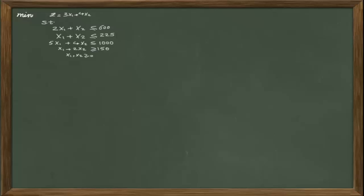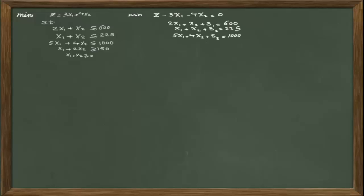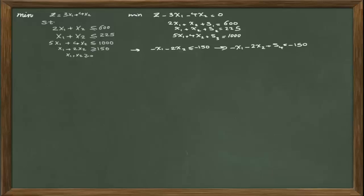The first thing we need to do before starting the dual simplex method is to standardize this problem. The first three constraints can be easily standardized by adding slack variables, since they are all in the form of less than or equal. For the last constraint, we first multiply it by negative one to change the sign to less than or equal, and then add a slack variable to standardize it. So the problem is now standardized and we can start the dual simplex method.